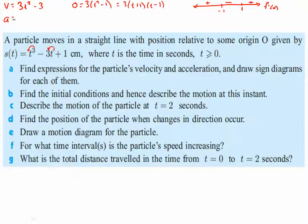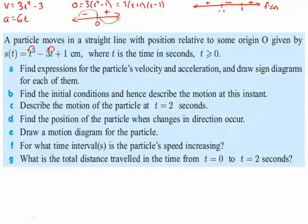Acceleration is the derivative of velocity: bringing the two in front gives 6t, and the derivative of −3 is zero. So acceleration = 6t. The sign diagram is straightforward — acceleration is zero when t = 0, negative for t < 0, and positive for t > 0. This tells us the original function is concave down before zero and concave up after, which is consistent with the sign diagram for velocity showing the function going up, down, then up.